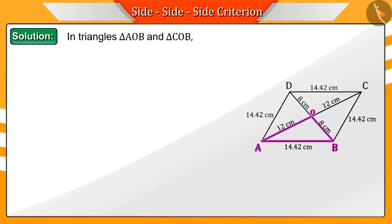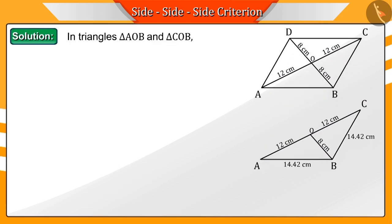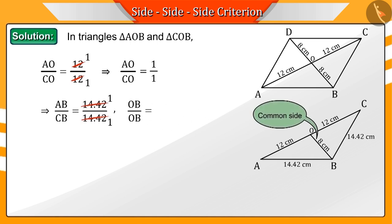Now, let's discuss triangles AOB and COB. From these two triangles, we see that the ratios of corresponding sides—AO to CO, AB to CB, and OB (the common side)—are equal.